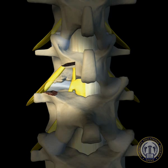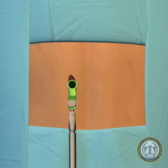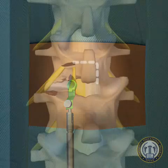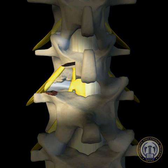At this point in the procedure, if the patient has symptomatic central stenosis, the tubular retractor may be angled to perform a more medial laminotomy. If necessary, bilateral decompression can be achieved by undercutting the spinous process and drilling away the contralateral lamina. Frequently, posterior osteophytes will need to be removed to optimize access for the discectomy.